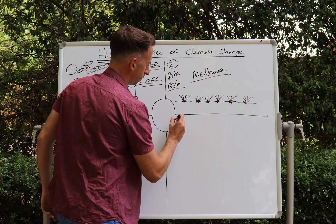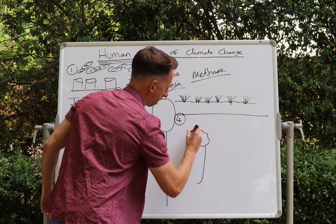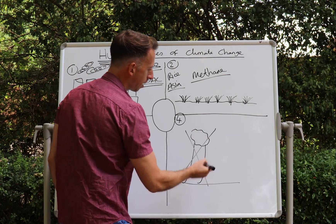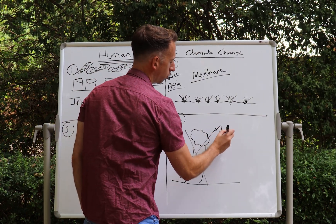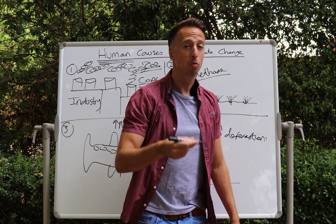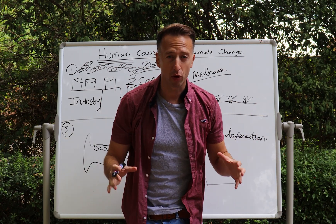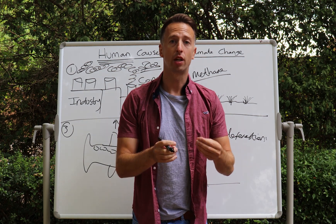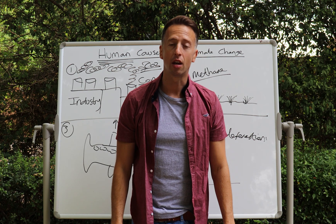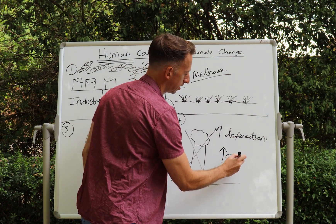Number four: cut a tree down — obviously that means there's going to be an increase in deforestation. If there's more deforestation, the destruction of our rainforests and other forests around the world, that of course leads to an increase in CO2, carbon dioxide.